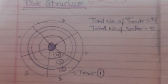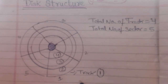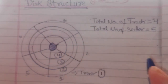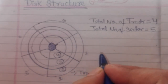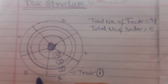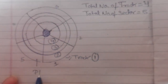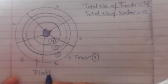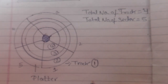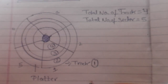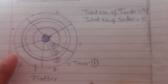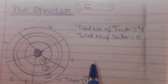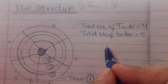Now there is another term which is known as platter. This upper part is known as platter. Platter is the upper part which is associated with the read/write head. When we want to read the data from a disk, we need a read/write head which reads data from the platter. So you now know about tracks, platters, and sectors.